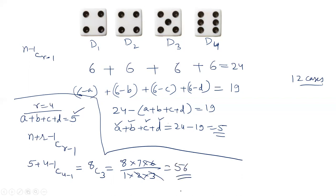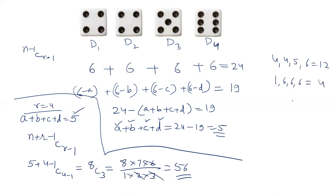So there are 56 ways in which we can get a total of 19 when throwing 4 dice simultaneously. The 12 cases for 4, 4, 5, 6 were explained earlier. Another example: 1, 6, 6, 6 sums to 19, and there are 4 such cases. If you count manually, you will get 56 only. But this formula is exactly why I made this video.